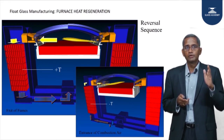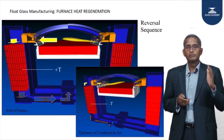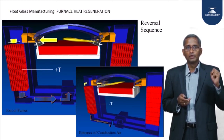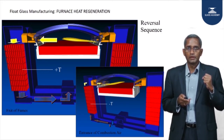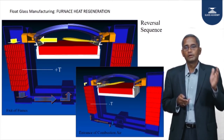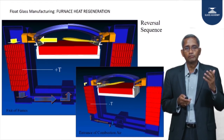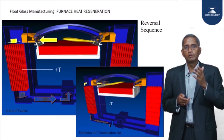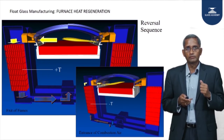The combustion air now passes through the regenerator which is already soaked with heat. This regenerator, which absorbed heat from the flue gas coming at 1450°C, takes the atmospheric-temperature combustion air and heats it so that it enters the furnace at 1300 to 1350°C. So what we lost at 1450°C, we have majority regained back as preheated combustion air for the next 20 minutes.